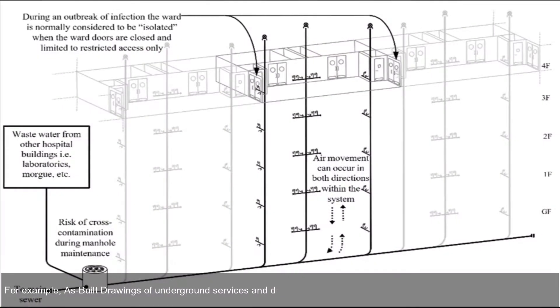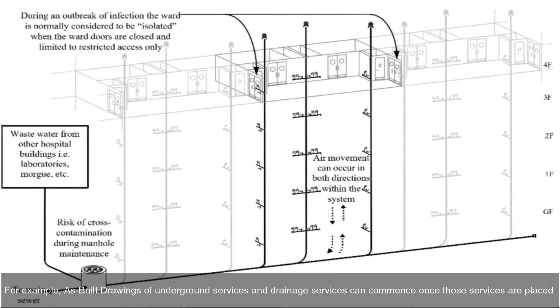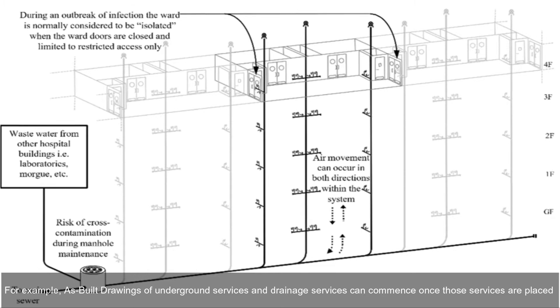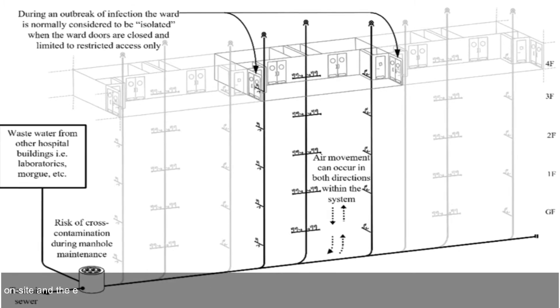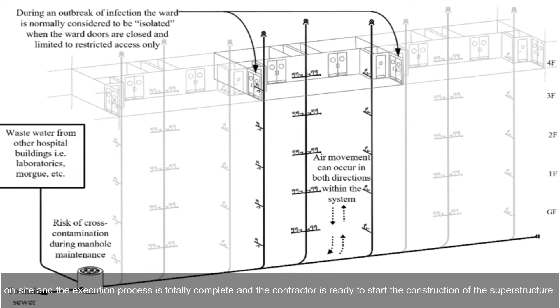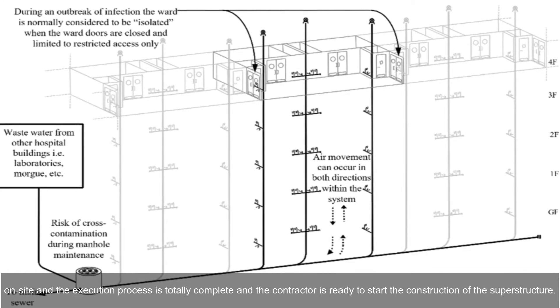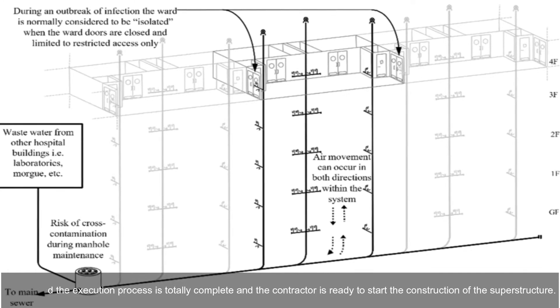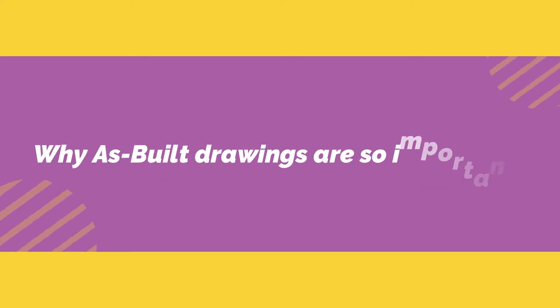For example, as-built drawings of underground services and drainage services can commence once those services are placed on site and the execution process is totally complete, and the contractor is ready to start construction of the superstructure.